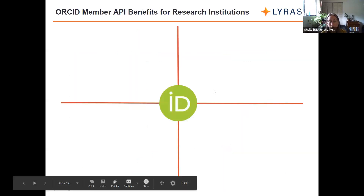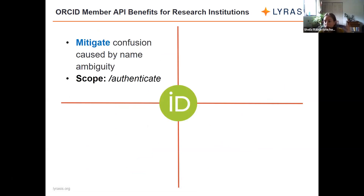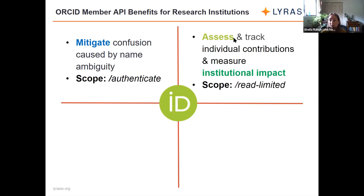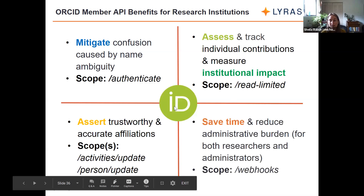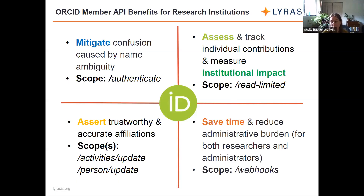These scopes and API permissions correspond to those functionalities we looked at earlier. To get that authenticated ORCID ID and mitigate name confusion — the authenticate scope covers that. To read and assess information from ORCID records — the read limited scope does that. To assert data to ORCID records — the two update scopes cover that. Webhooks can be used to reduce administrative burden because you're getting an update automatically when somebody's ORCID record is updated rather than asking them to report that manually.